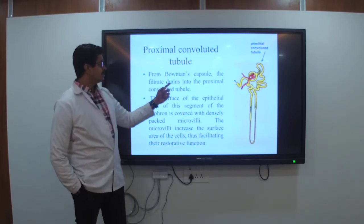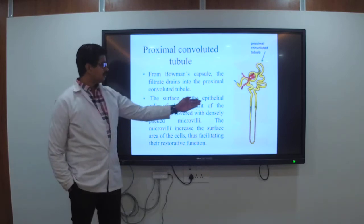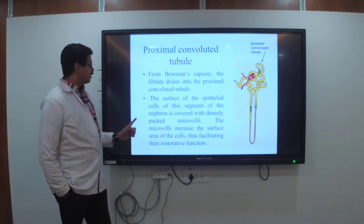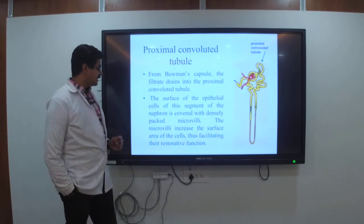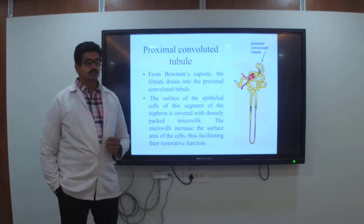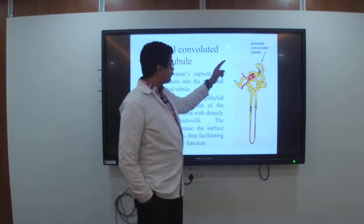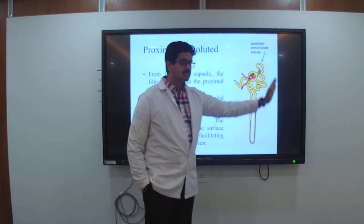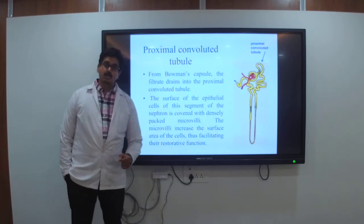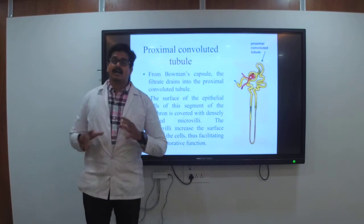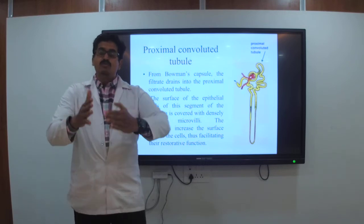From the Bowman's capsule, the filtrate drains into the proximal convoluted tubule. The surface of the epithelial cells of this segment is covered with densely packed microvilli. The microvilli increase the surface area of the cells, facilitating their reabsorptive functions. Once filtered from the glomerulus, as it passes through the proximal convoluted tubule, these microvilli become activated.